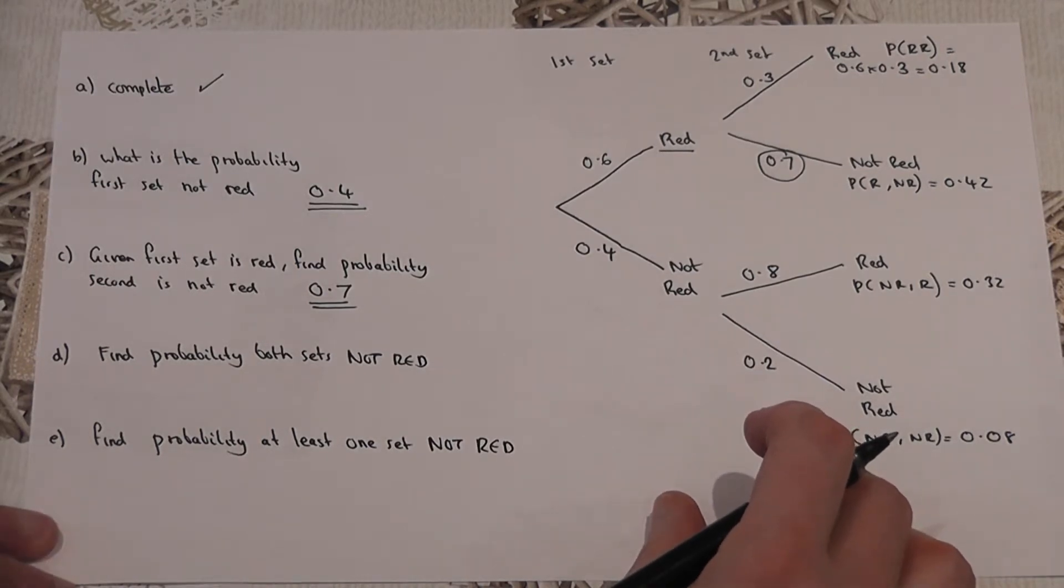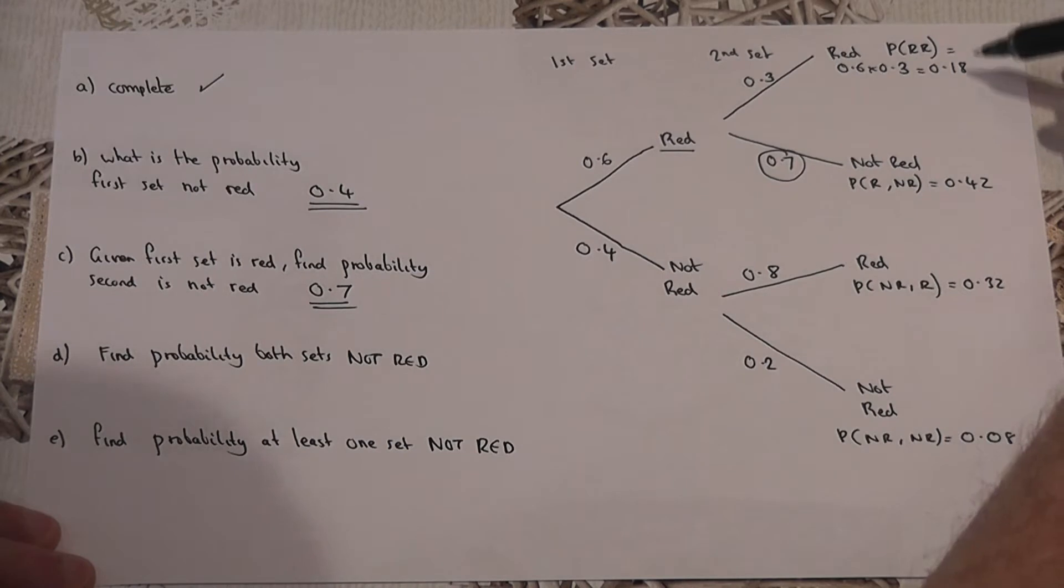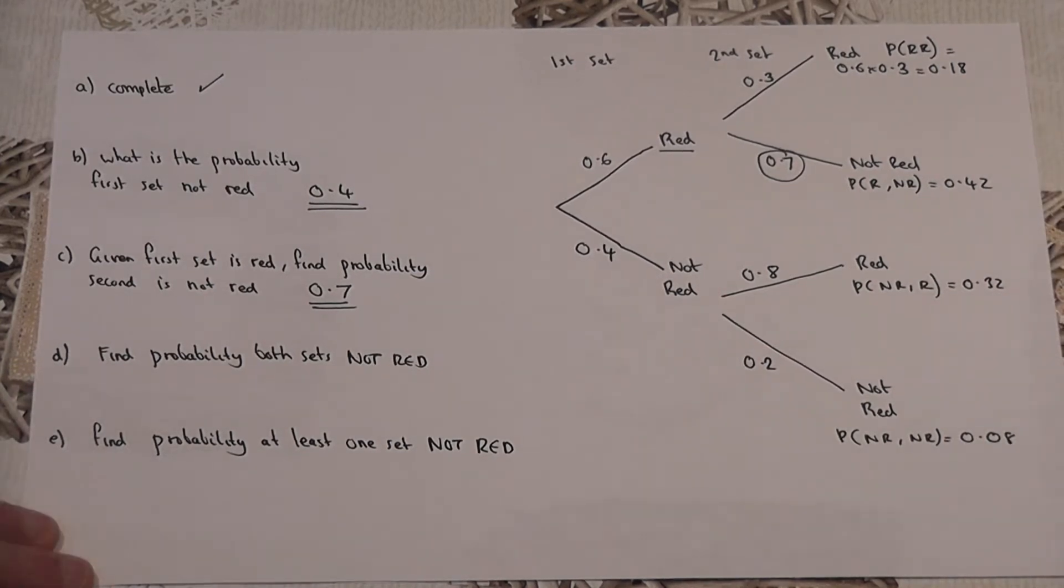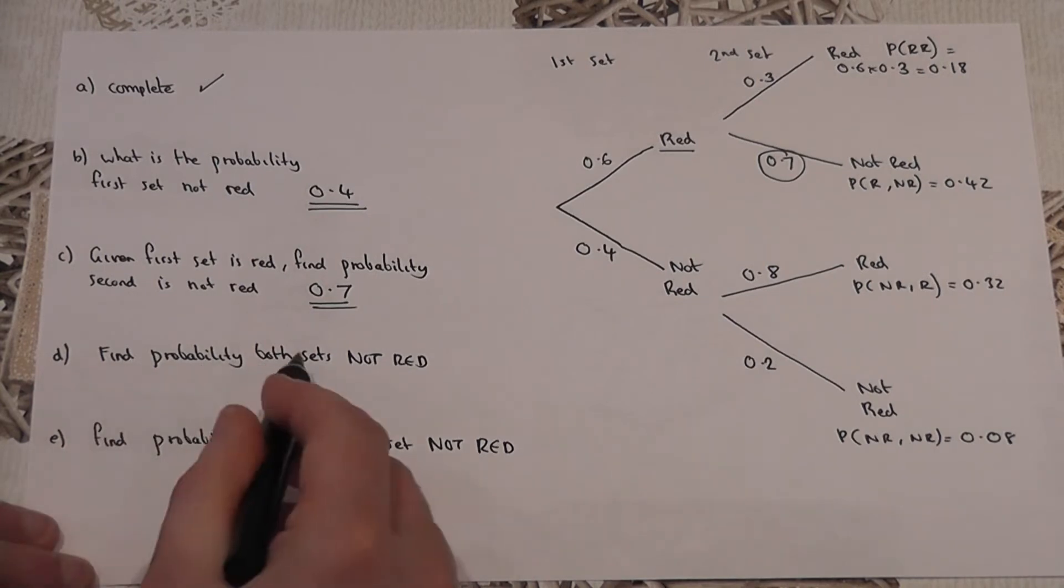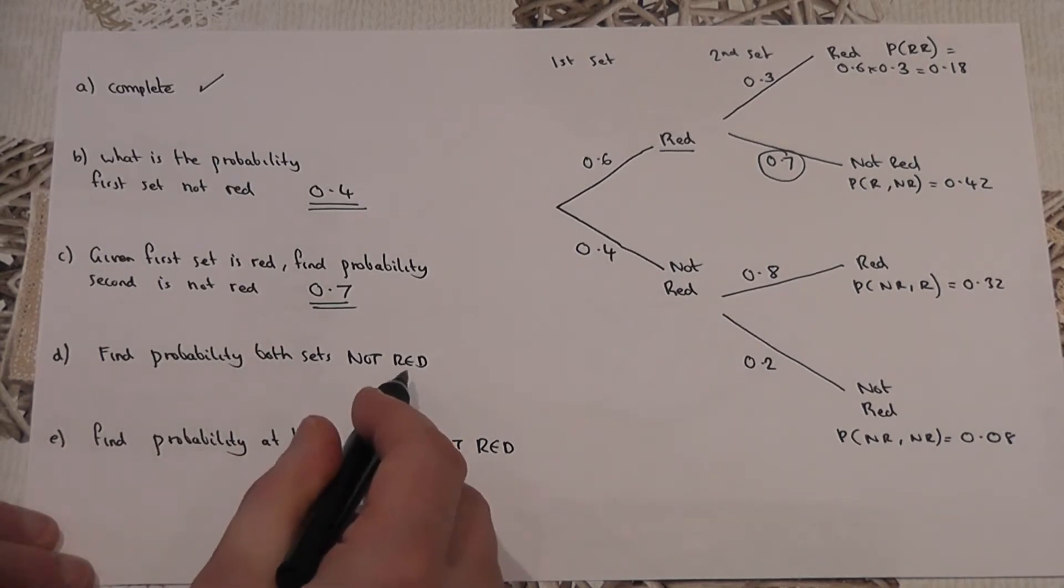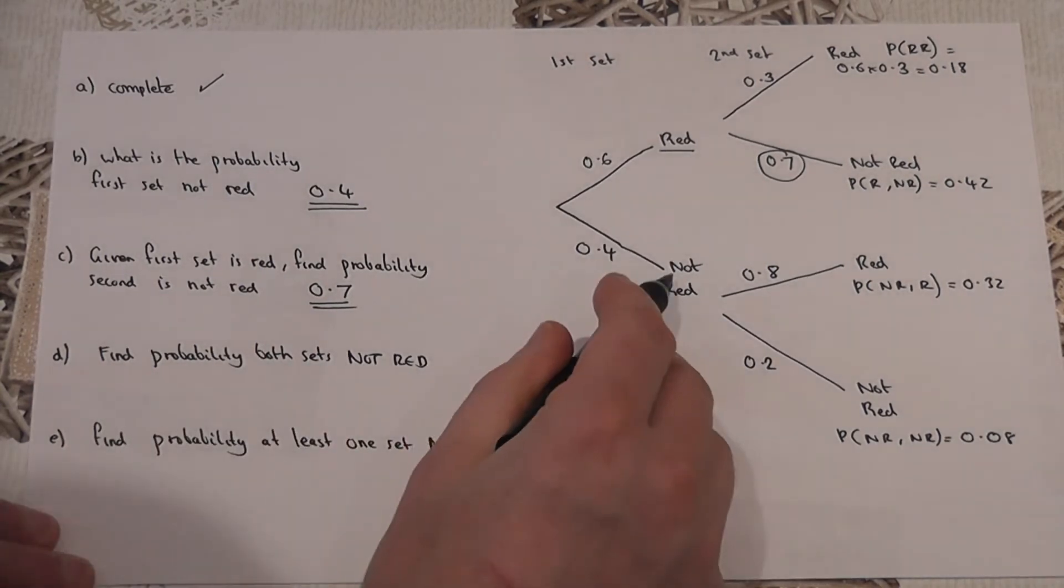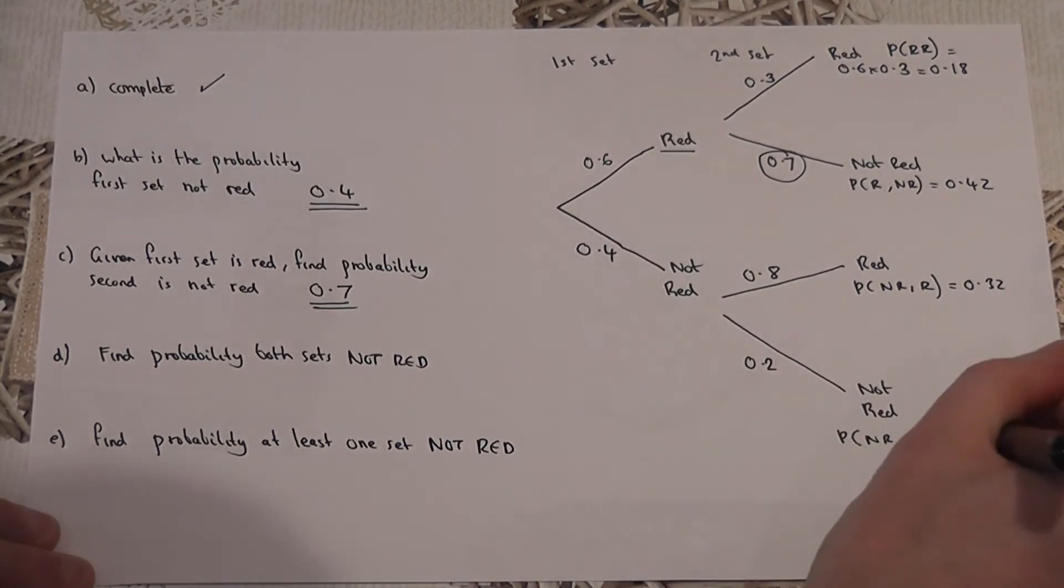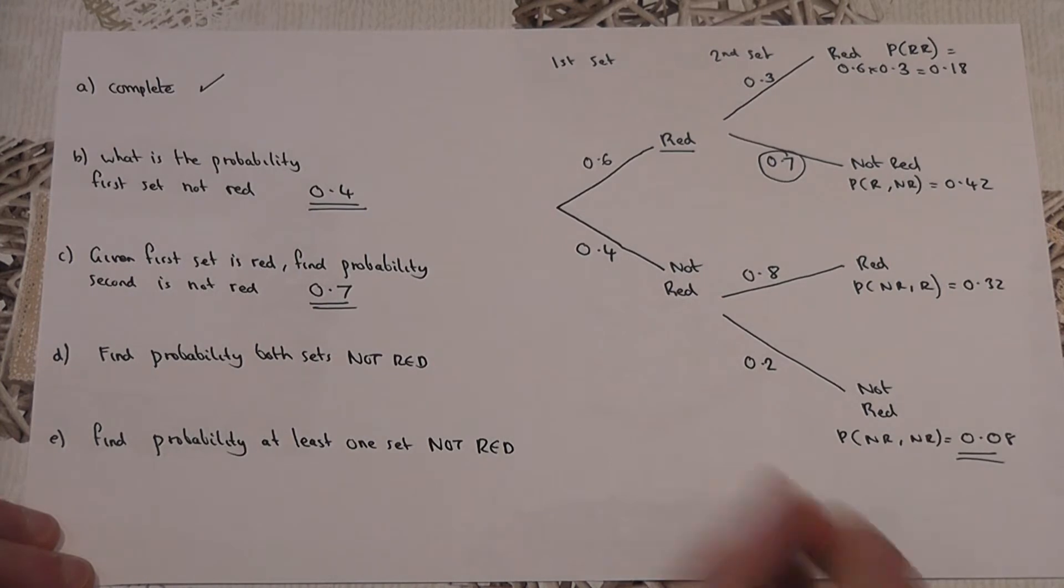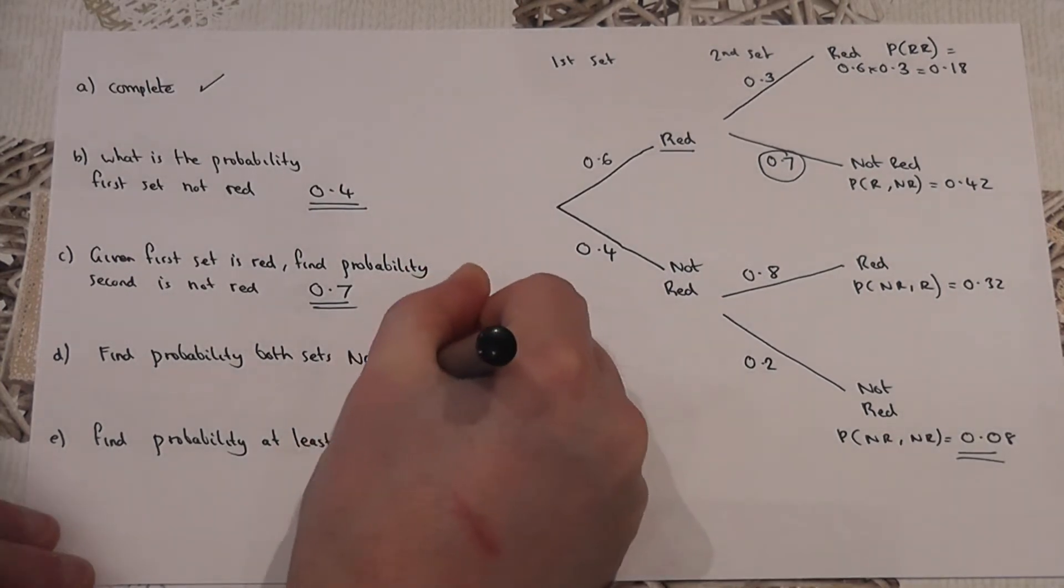In parts D and E we then use the calculations we've done on the tree diagram. This is where I find doing the calculations first is of great benefit. Because part D says, find the probability that both sets are not red. Well, both sets, set one, set two, not red. It's just this number down here. It's just 0.08.